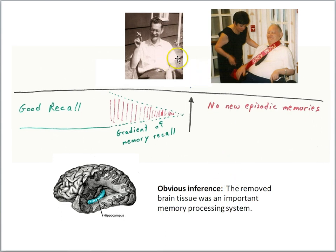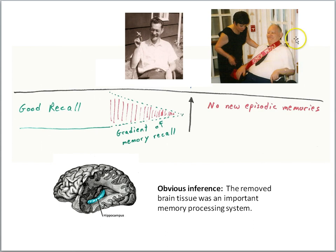H.M. spent most of his life under the care of his parents and then other people, because his memory disturbance prevented him from living a normal life. H.M. died in 2008, and his brain was dissected and studied by scientists. He will go down as one of the most famous neurological patients in medical history.